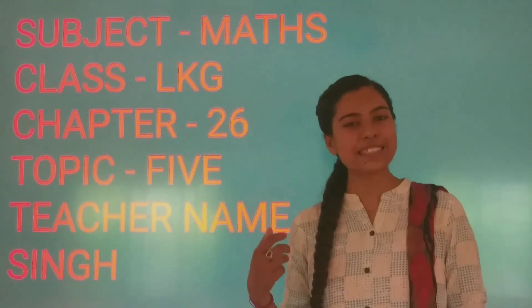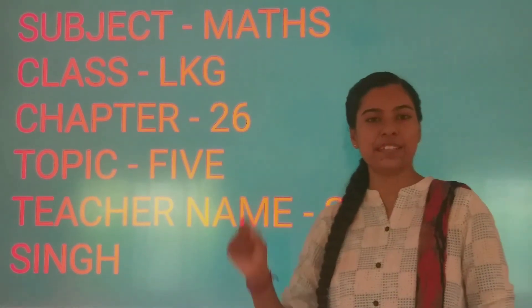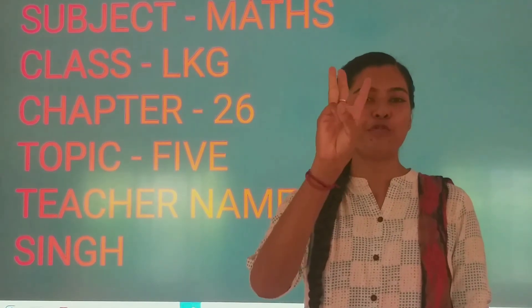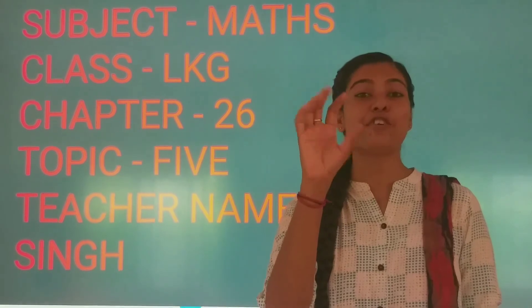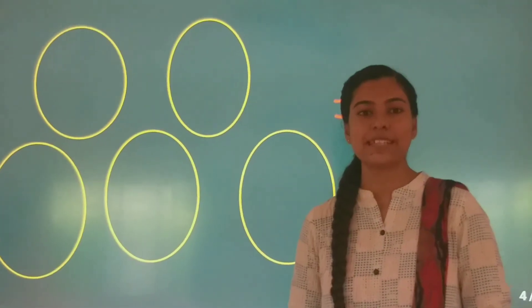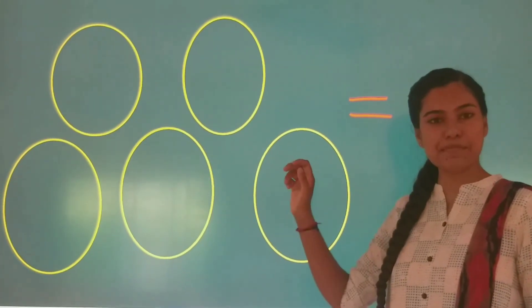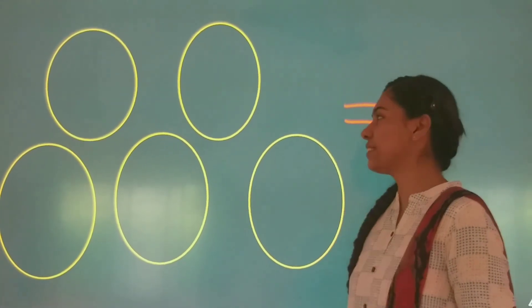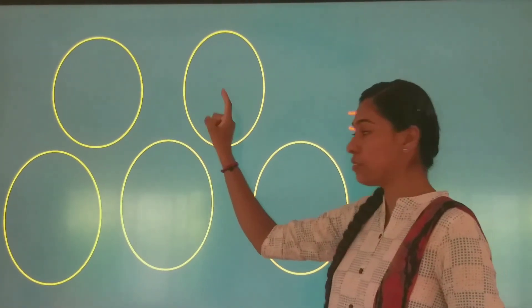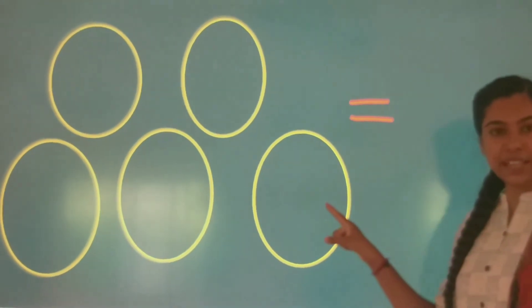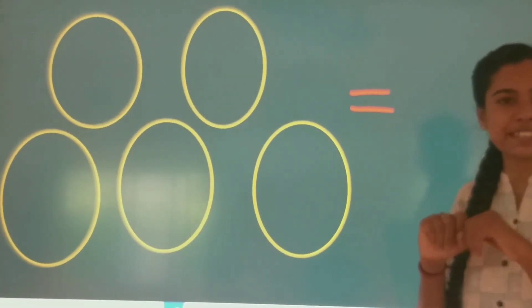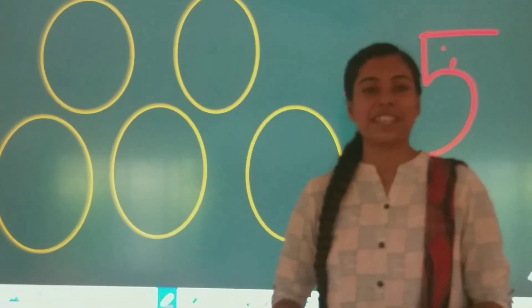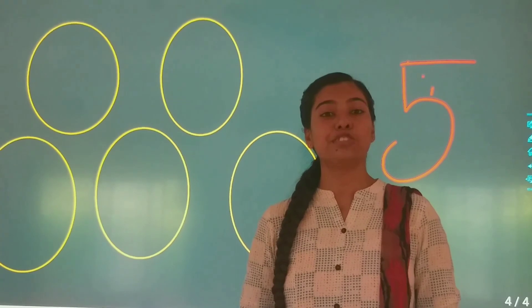Now you are going to learn the next number, that is five. Children, how many fingers do I have? One, two, three, four and five — how many fingers? Five. We shall count and you tell me what I should write. One, two, three, four and five. What should I write — five or six? Yes, five. Please learn from zero to five.